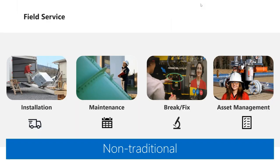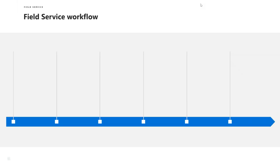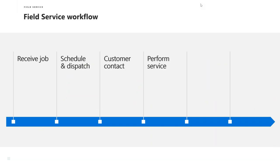What is field service? Field service can cover areas in your business from installation, maintenance, the traditional break-fix, and also managing assets that you may have out in the field. If we look at a typical workflow for field service, you'll receive a request for a job, and then someone is going to need to schedule and dispatch for that job, make contact with the customer, perform the needed service, and then collect payment from the customer. Once that cycle is complete, the actual work order can be completed and closed out and saved into your historical records.